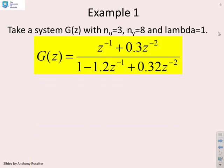First example, then. We'll take a system here, simple G of z, which is second order. We're going to take N_u equals 3, N_y equals 8, Lambda equals 1.